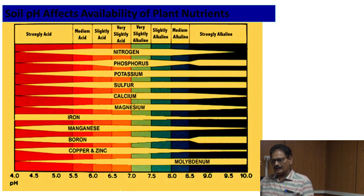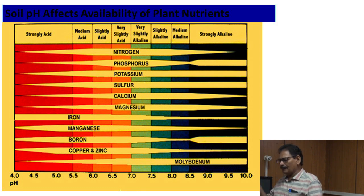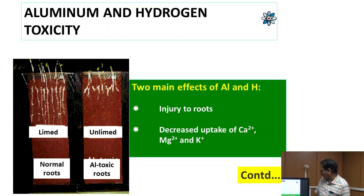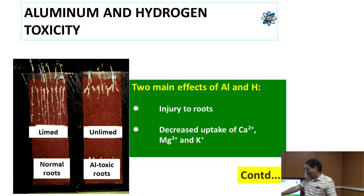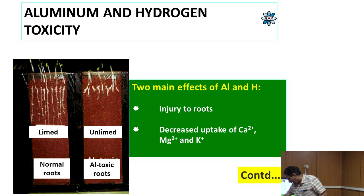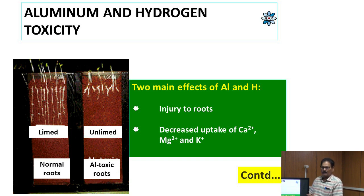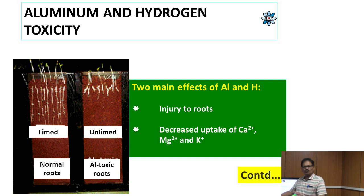Our plants can be affected due to the deficiency of these nutrients. Aluminum and hydrogen are the main culprits that affect plant growth. Aluminum affects the root growth. Here we can see limed and normal roots versus unlimed roots where aluminum toxicity has developed. In acidic soil, lime application is most essential, and in the absence of liming, our root growth will be affected due to aluminum toxicity.